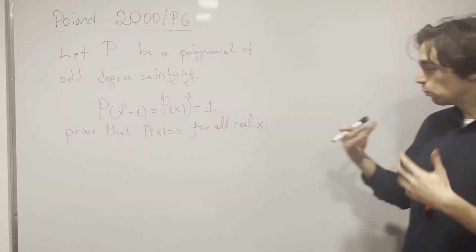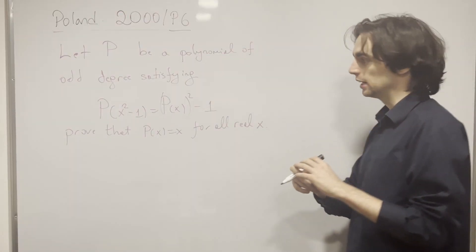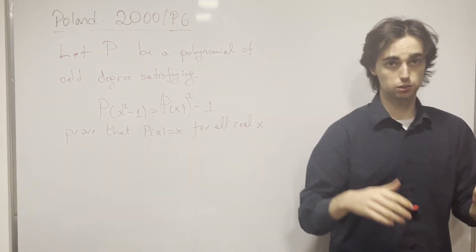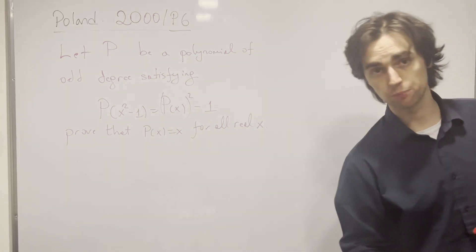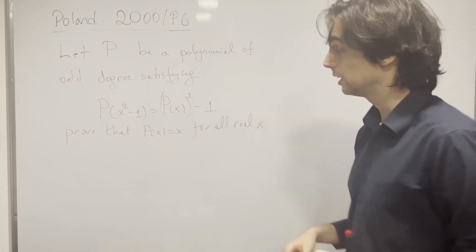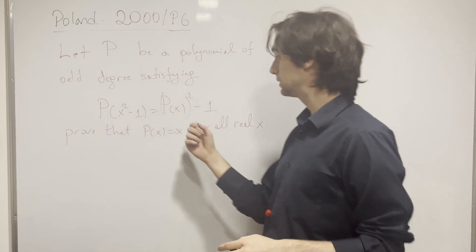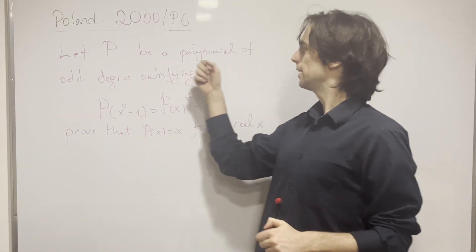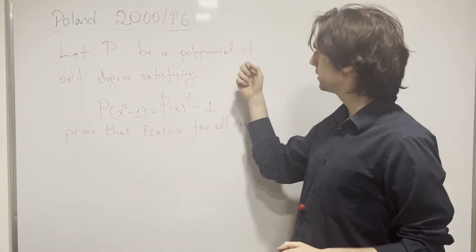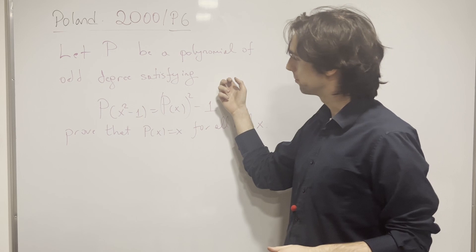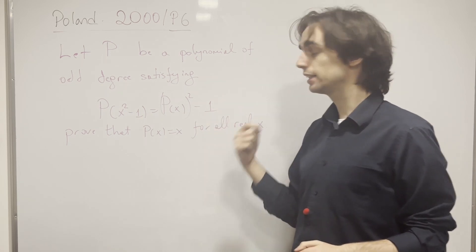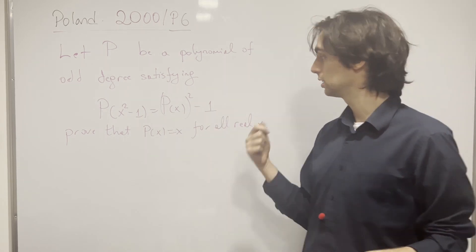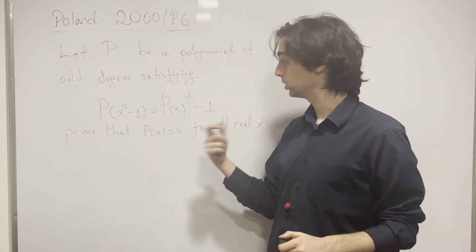What do you notice about these two sides, first and foremost? The thing I notice is that if a polynomial is of odd degree, it has at least one real zero.